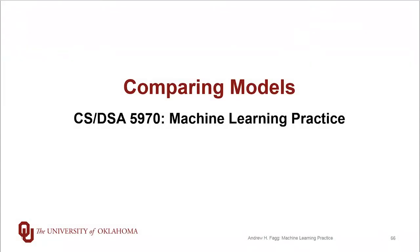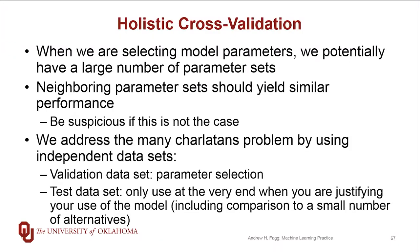We've now talked about the holistic cross-validation procedure and now it's time to pull all these pieces together and finally talk about comparing models. When we're selecting model parameters, we have a very distinct possibility that we're trying a tremendous number of parameter sets, and this is definitely a concern from the charlatans perspective.